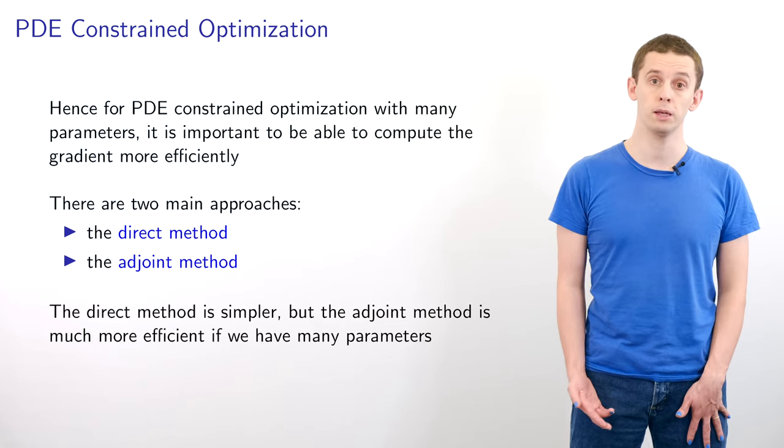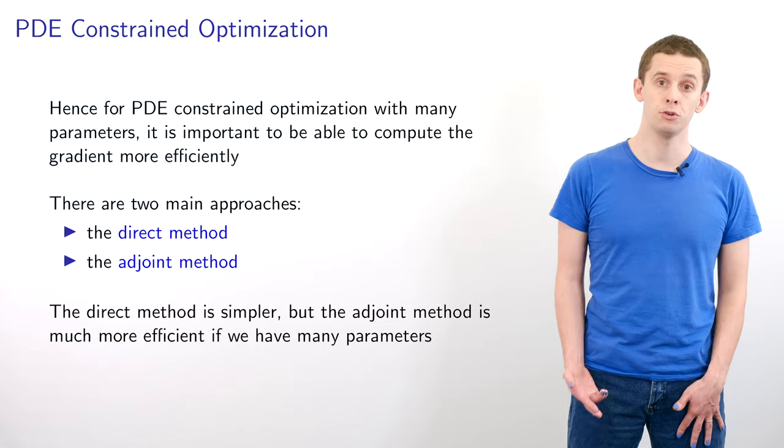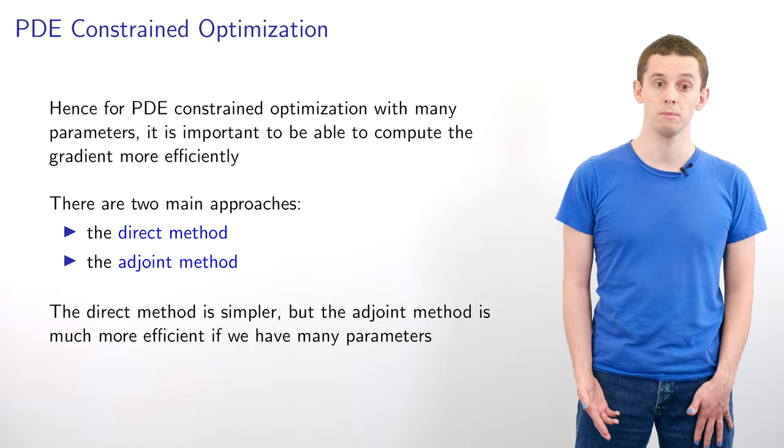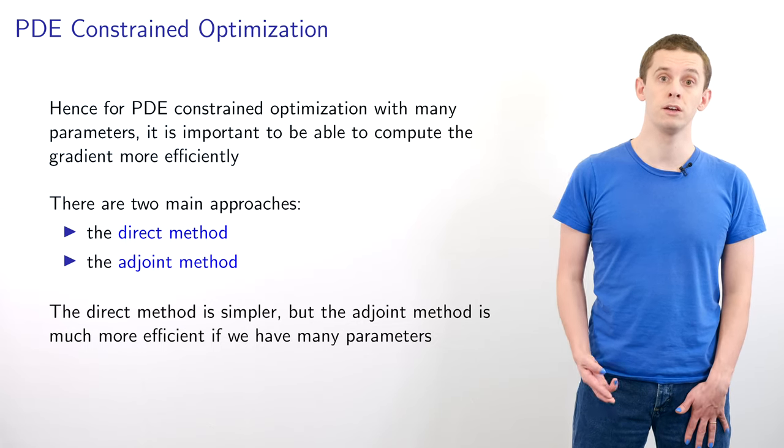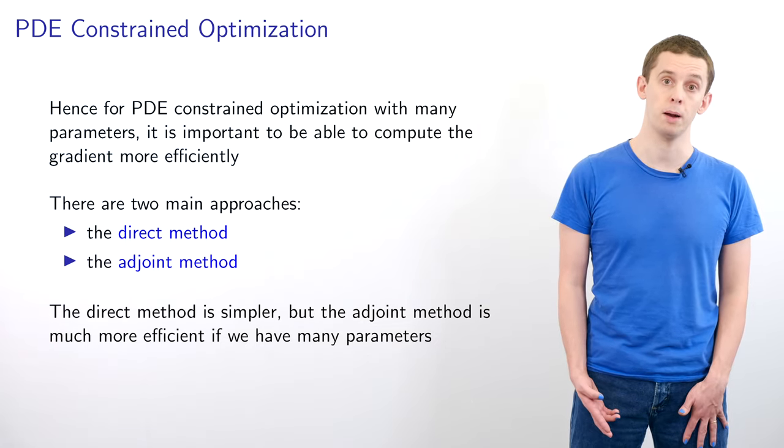There are two main approaches: the direct method and the adjoint method. The direct method is simpler but the adjoint method is much more efficient if we have many parameters.